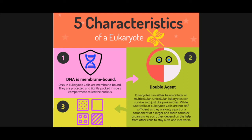There are five characteristics of a eukaryote shown in this diagram. Number one, opposite to prokaryotic cells: eukaryotic cells have membrane-bound DNA. DNA in eukaryotic cells is protected and tightly packed inside a compartment called the nucleus. This is one of the main differences — prokaryotic cells' DNA is not enclosed in a membrane, while eukaryotic cells have a protective membrane called the nucleus.